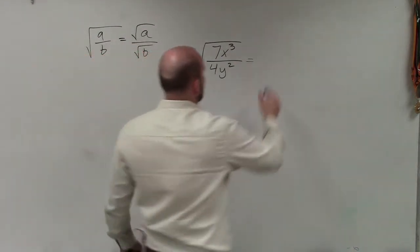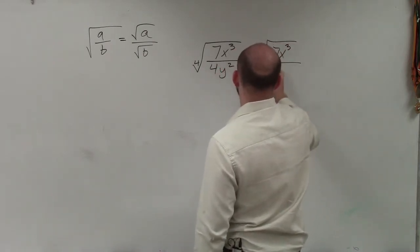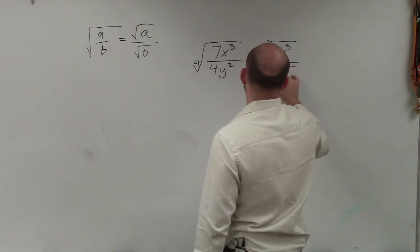can be rewritten as the radical of a over b. So therefore, I can rewrite this as the fourth root of 7x cubed divided by the fourth root of 4y squared.